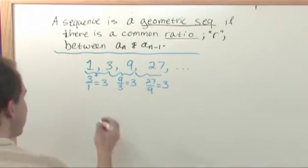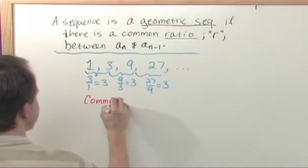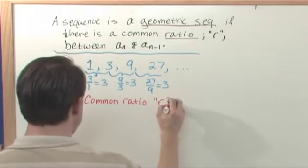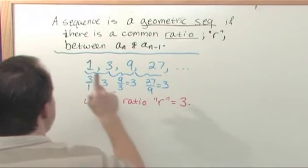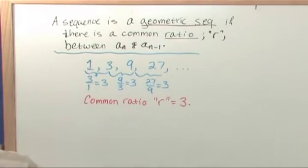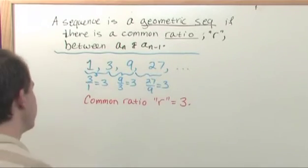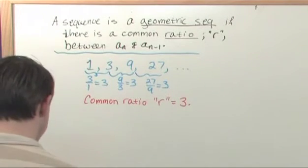It's called a geometric sequence. So we have a common ratio, R is what we call it, and that's equal to 3 in this case. And depending on the numbers you have, for the different sequences you have, the ratio might be 2 or 10 or 15 or 1 fifth or whatever. But it's going to be a constant ratio between elements like this.